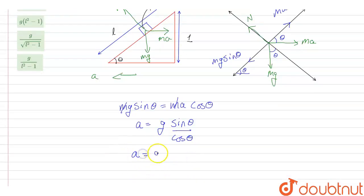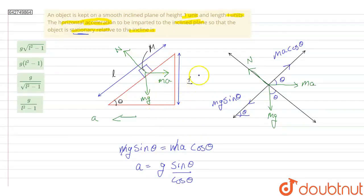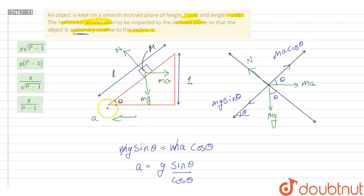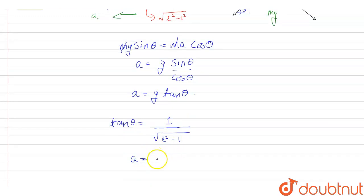Now let us try to find tan theta. Tan theta is perpendicular upon base. Here perpendicular is 1. The length of this base will come from Pythagoras theorem, that will be under root of l square minus 1 square. Therefore this will be 1 upon under root of l square minus 1. Therefore acceleration a will be equal to g upon square root of l square minus 1.